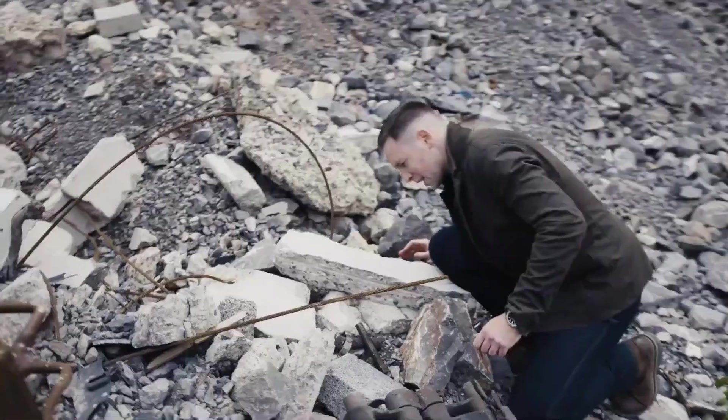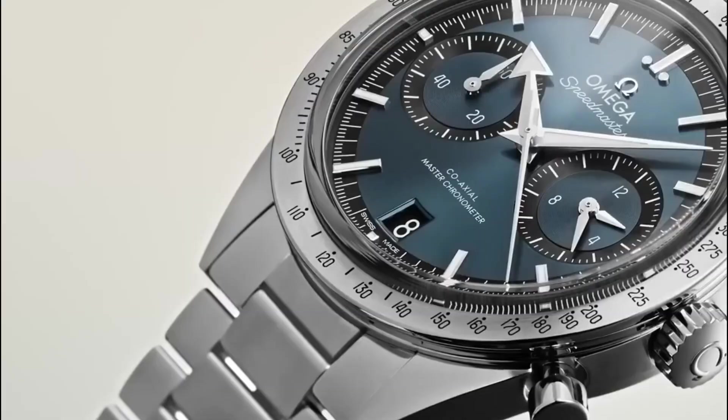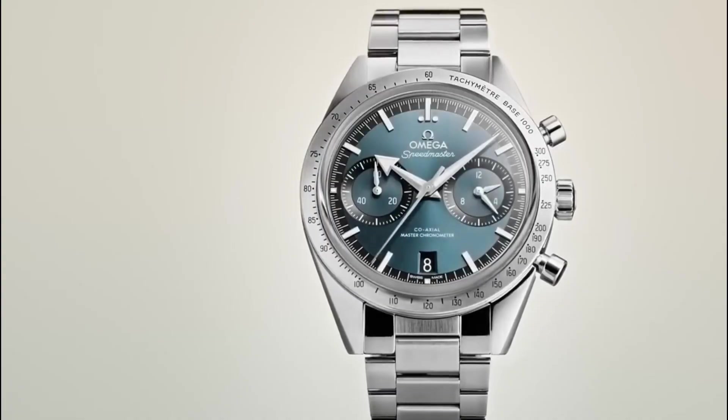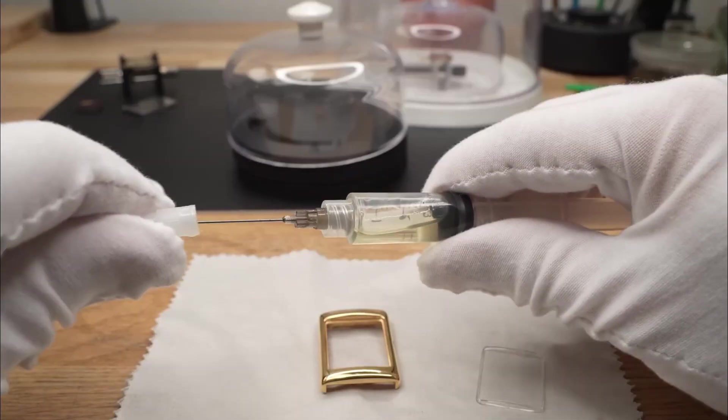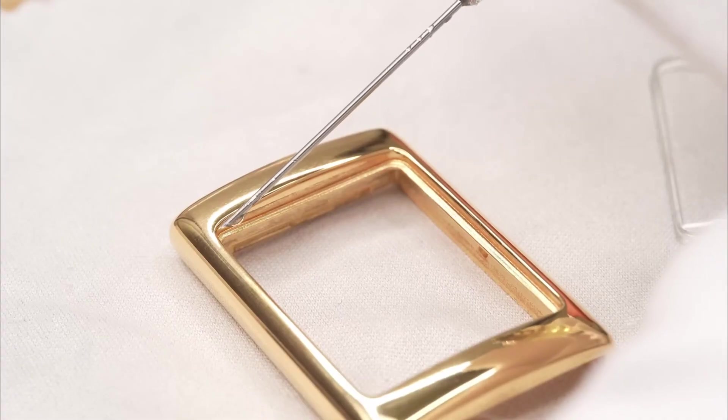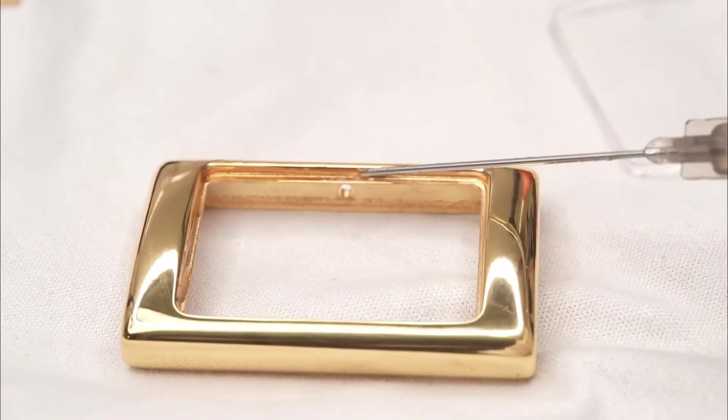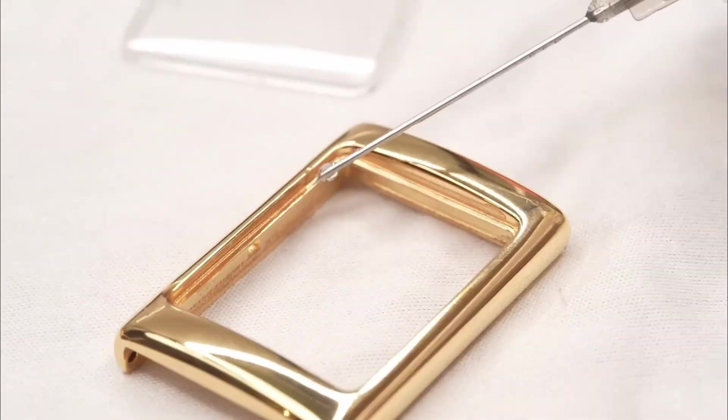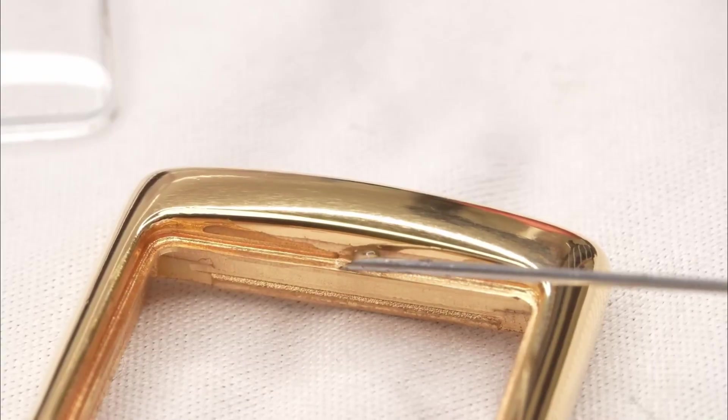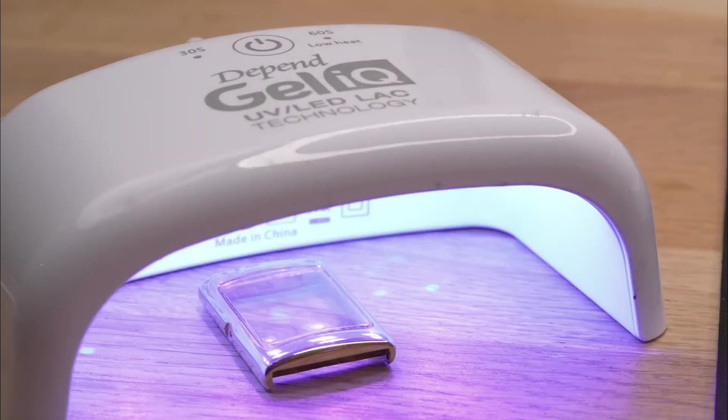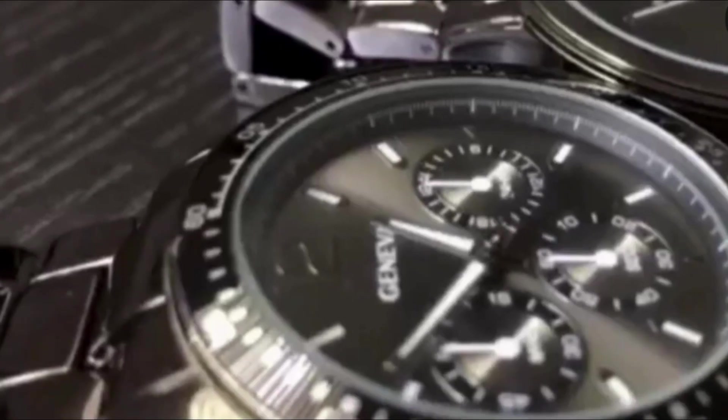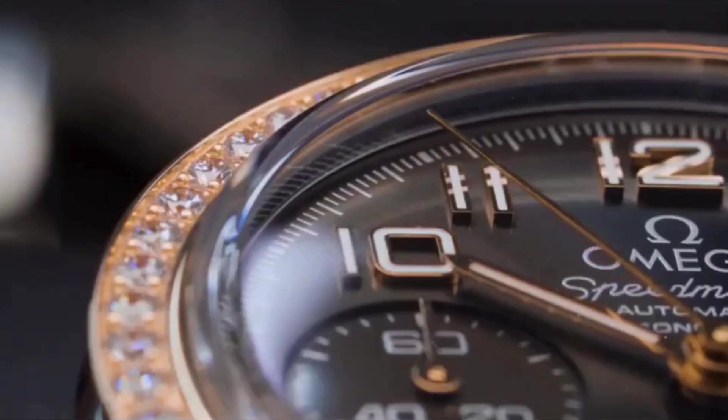After surviving every trial, the final chapter adds elegance and immortality. At Omega, the finishing process transforms mechanical brilliance into wearable art. Polishing begins first. Cases and bracelets are buffed with diamond pastes until every surface gleams like a mirror. Sharp lines are preserved, curves softened, and the interplay of brushed and polished textures creates depth that catches the eye at every angle. Next comes engraving. Serial numbers, brand markings, and decorative motifs are etched with laser precision. These tiny details serve both as art and as security, ensuring authenticity against countless imitations.